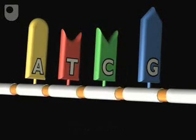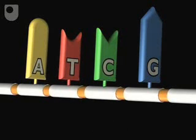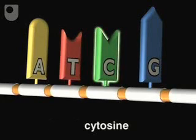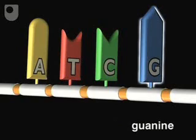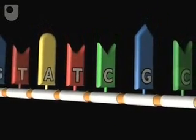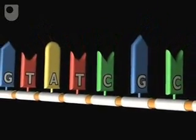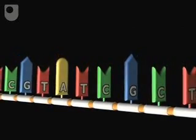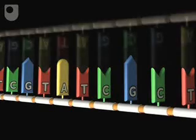There are actually four types of base: adenine, thymine, cytosine, and guanine. Within a strand of DNA, the bases can come in any order. And just how important this sequence is will become clear later.